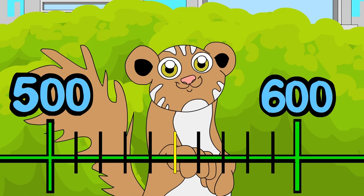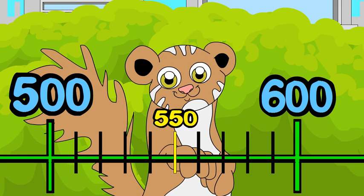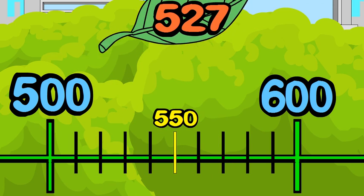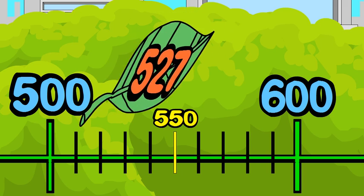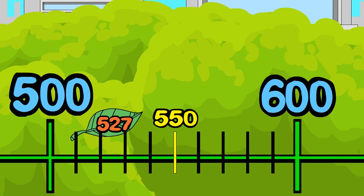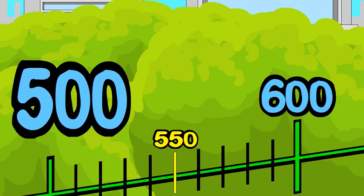The midpoint is 550. Step three: locate 527 on the number line. 527 is less than 550, so you are ready for step four. Step four: round. 527 is closer to 500 than to 600, so to the nearest hundred, 527 rounds down to 500.